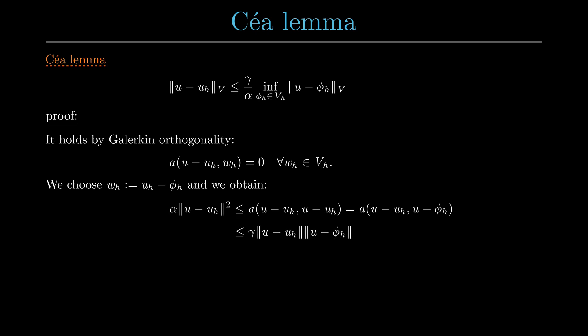Now we apply the continuity of the bilinear form. In the last step, we reorder the terms in this inequality and pass to the infimum in the function space vₕ. This completes the proof.